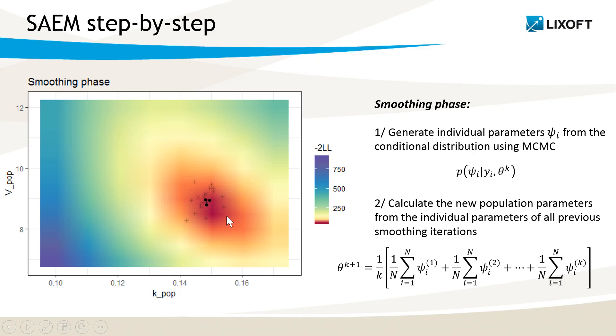For iteration 3, I generate again 10 more individual parameters, and now average over 30 values to get the new population parameters, and so on.